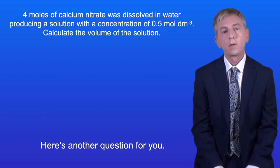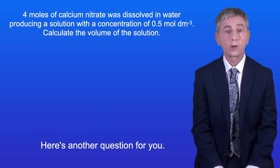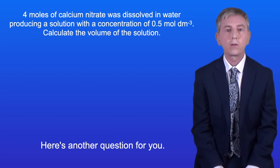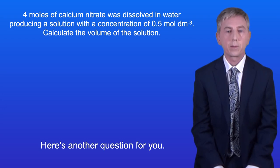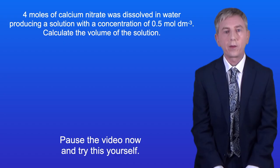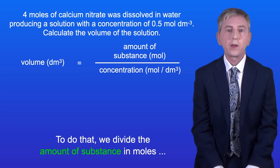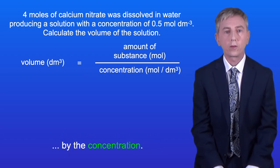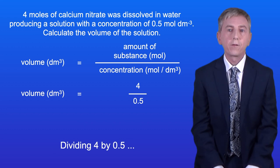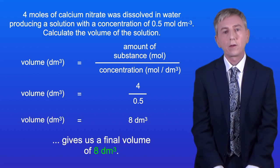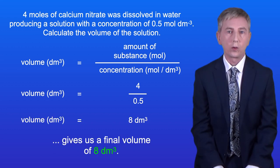Here's another question for you. 4 moles of calcium nitrate was dissolved in water, producing a solution with a concentration of 0.5 moles per decimetre cubed. Calculate the volume of the solution. To calculate the volume of a solution, we divide the amount of substance in moles by the concentration. Dividing 4 by 0.5 gives us a final volume of 8 decimetres cubed.